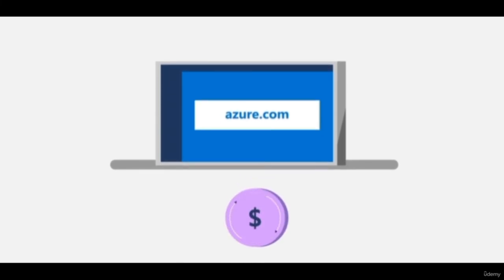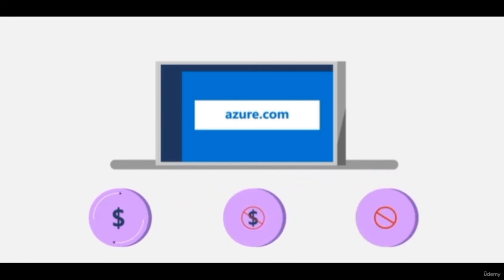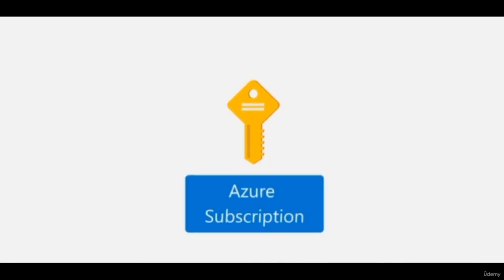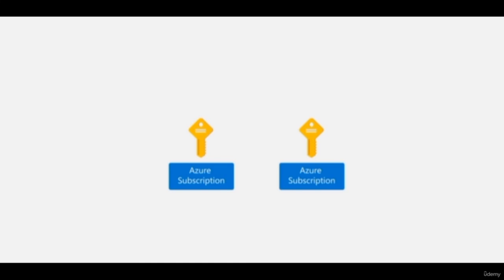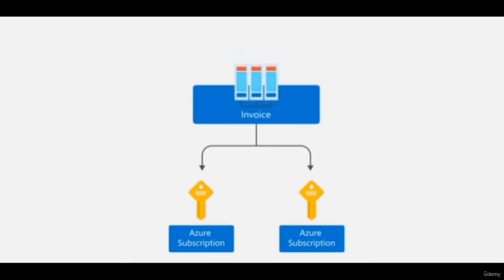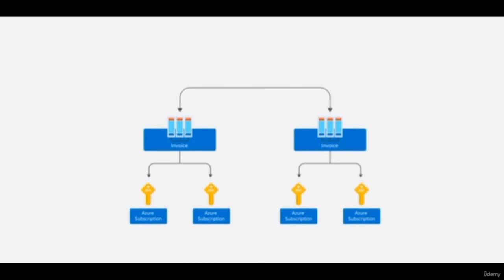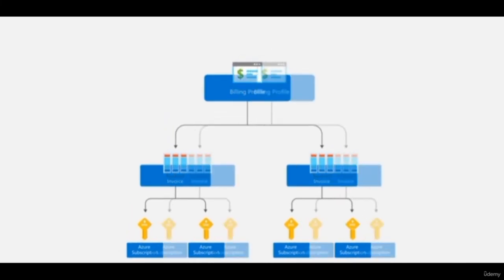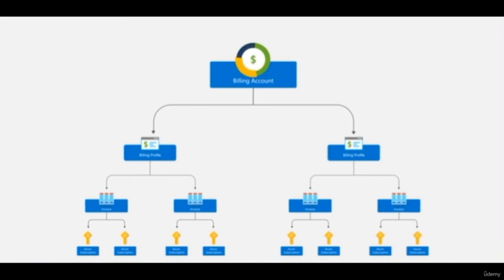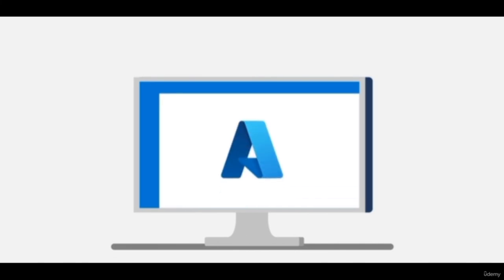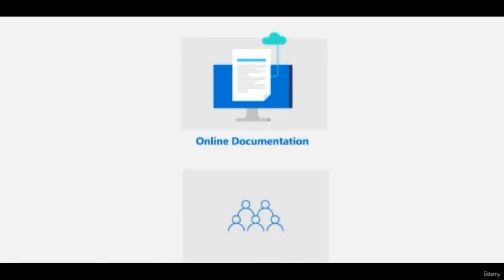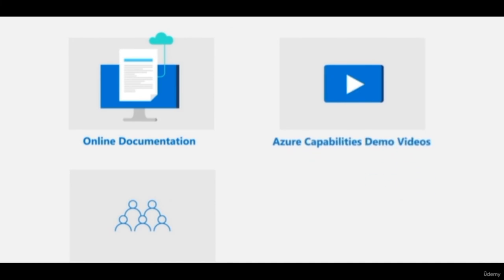With pay-as-you-go pricing, you pay only for what you use each month with no upfront commitment and you can cancel at any time. Once you have an active Azure account, you may want to create additional subscriptions for resource or billing management purposes. If you have multiple subscriptions, you can organize them into invoice sections. You can also set up multiple billing profiles, each with its own monthly invoice and payment method. Once your account is active, you have 24/7 access to online documentation, community support, and new Azure capabilities and demo videos created by Azure engineers.